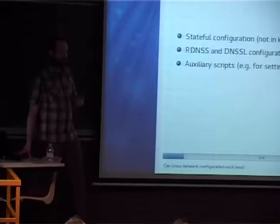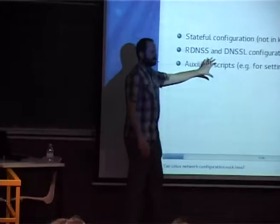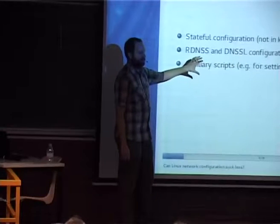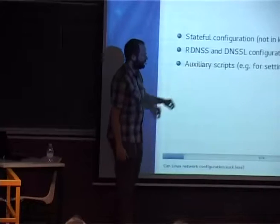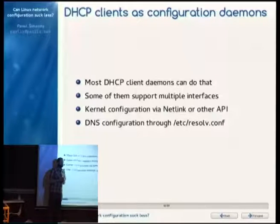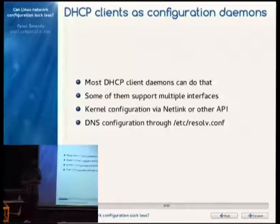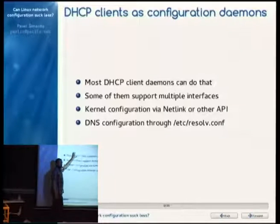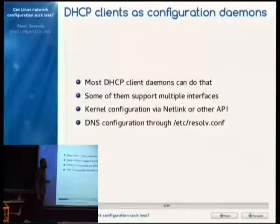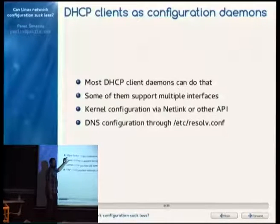For many things you also need auxiliary scripts. For example, when you receive a list of NTP servers over DHCP, you want to run a script to tell the NTP client daemon to use those servers. Plain DHCP clients are used as configuration daemons — they don't only do queries over the network, they also configure stuff and call auxiliary scripts.